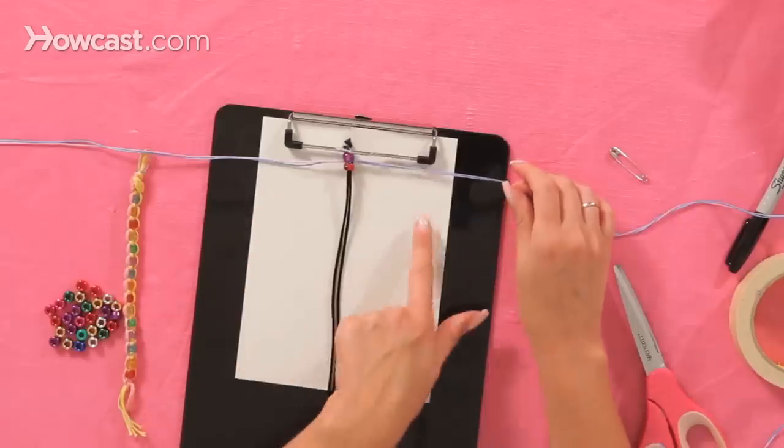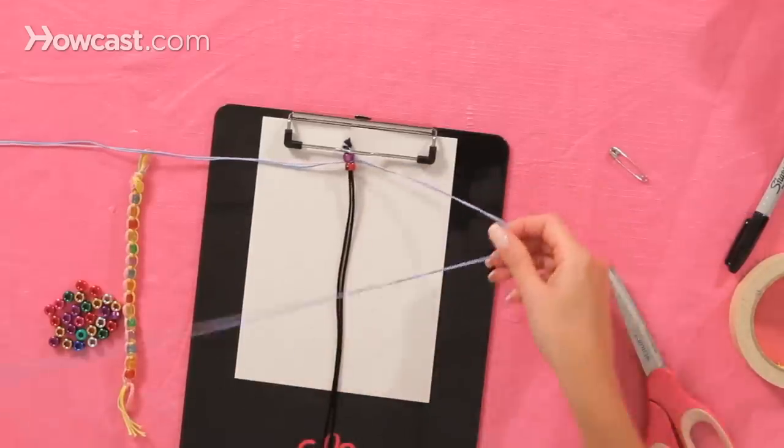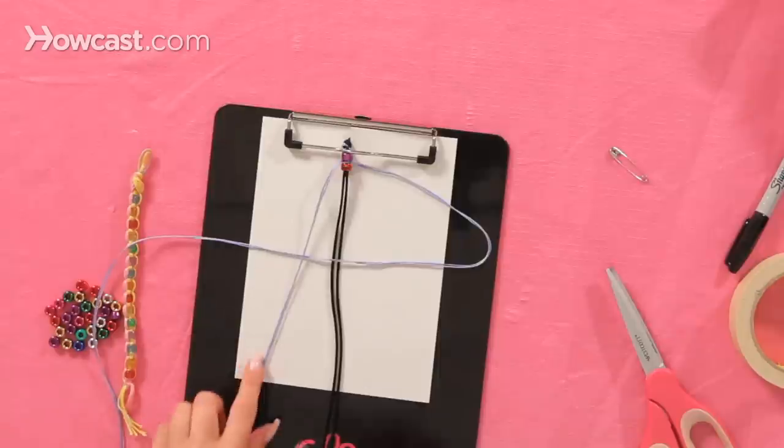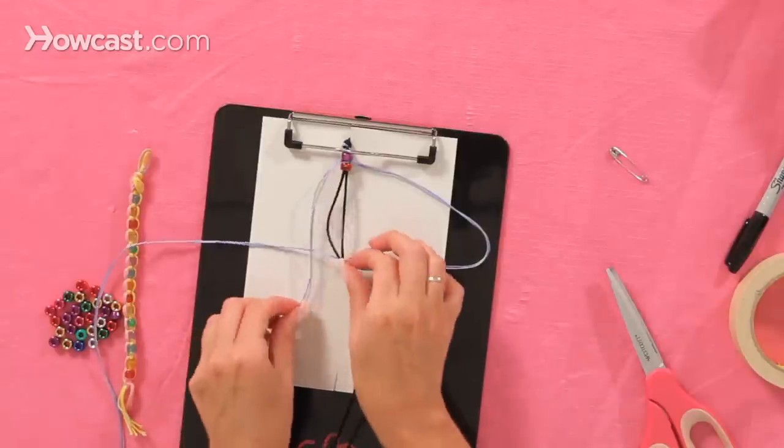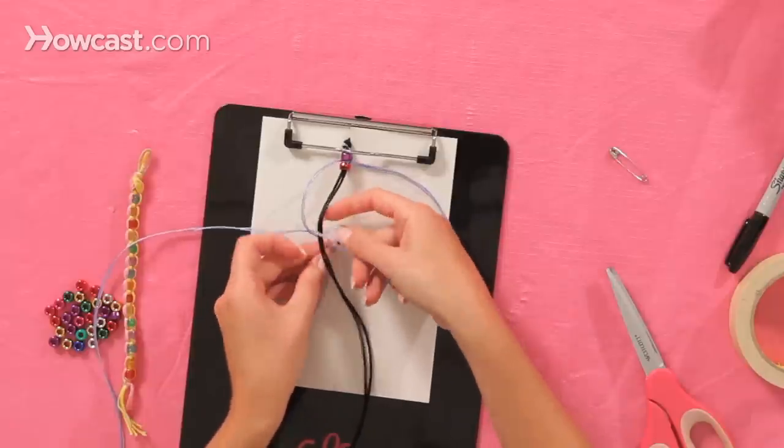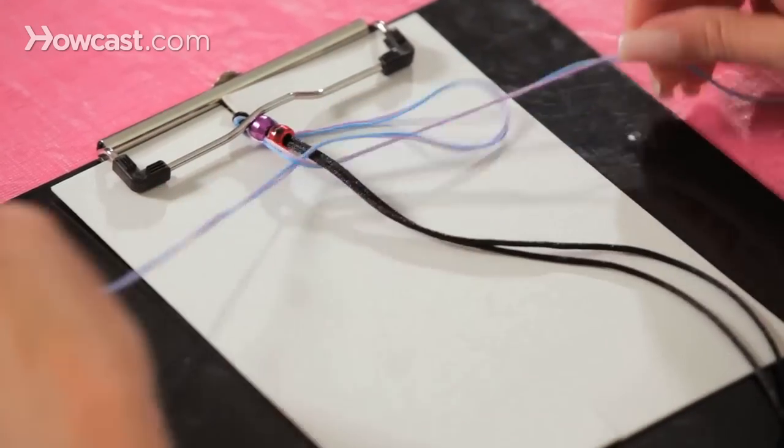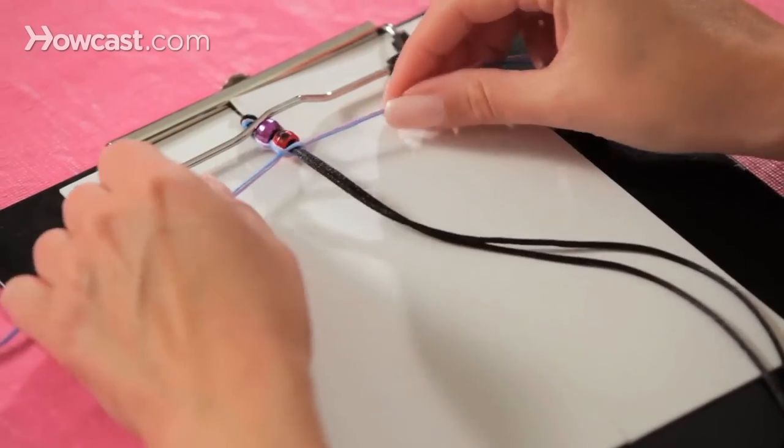Now since you worked with the left side before, you're going to work with the right side now. The right side is going to go across like a D. You're going to go straight down. It's sort of like a pretzel, and you're going to go diagonally across into the D that you made.